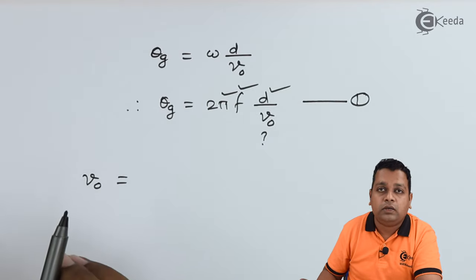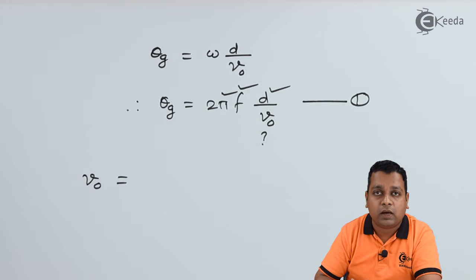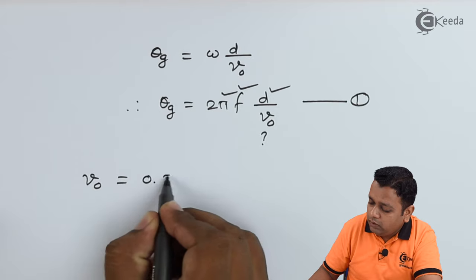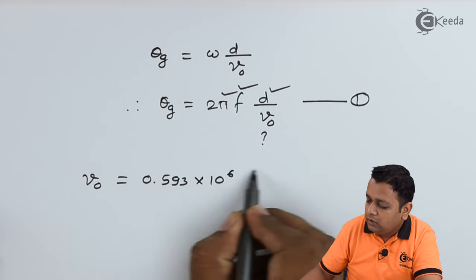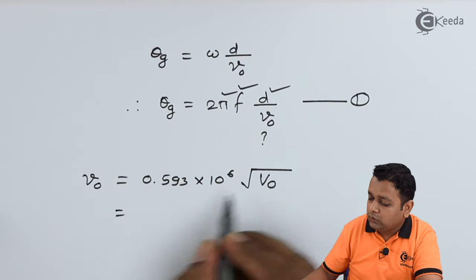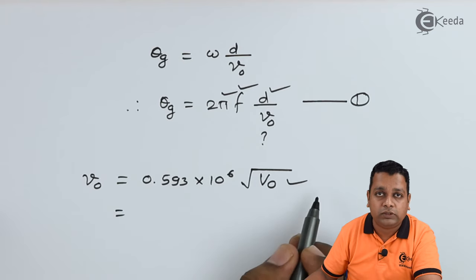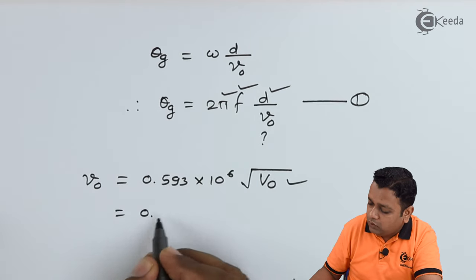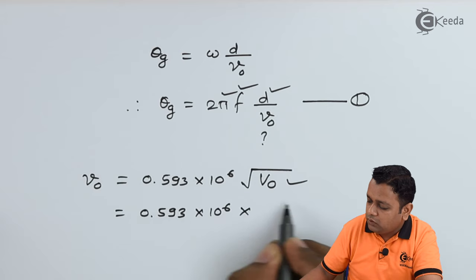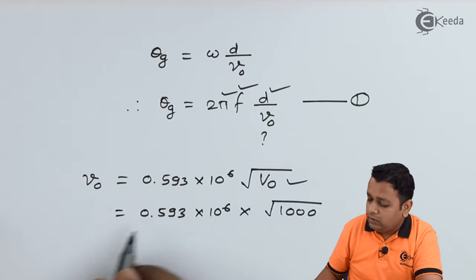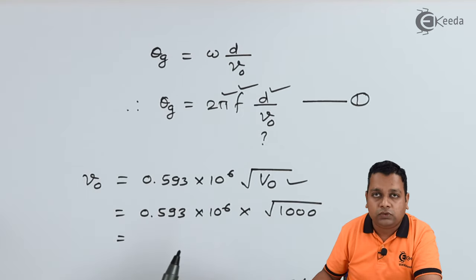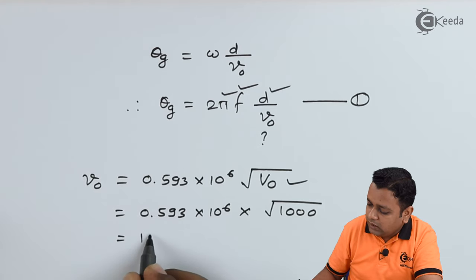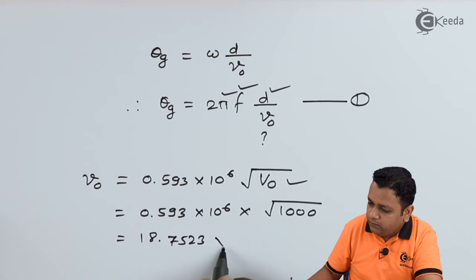V0 is actually the DC electron velocity. Once only the anode potential is applied to the device, the electrons are generated at the cathode end and they travel towards the anode, so the velocity attained by that one can be given in terms of small v0. The formula to compute it is 0.593 × 10^6 × √(V0). Capital V0 is already provided, it is 1000 volts. Hence the next step to compute small v0 will be 0.593 × 10^6 × √1000.